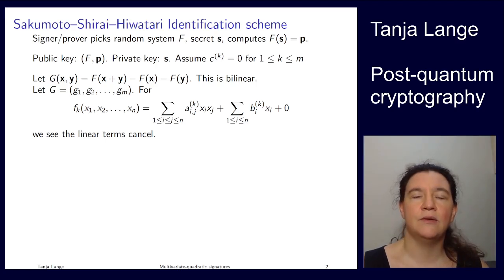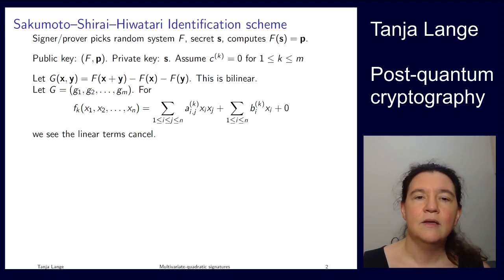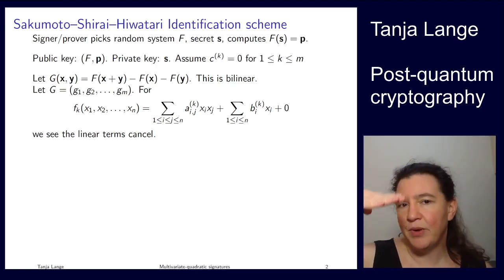And then the claim, which we're going to prove in a moment, is that this is a bilinear function. Bilinear means that you can have sums in both arguments. So if you have G of x plus z comma y, that's equal to G of x comma y plus G of z comma y. And you can also do sums in the second half.